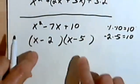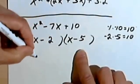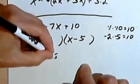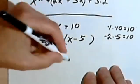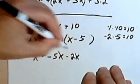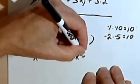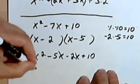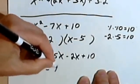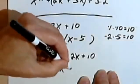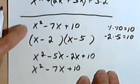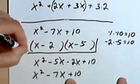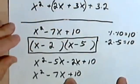And again, we can check by foiling it back to its original. x times x is x squared, x times negative 5 is negative 5x, x times negative 2 is negative 2x, and negative 2 times negative 5 is positive 10. I'll add these two middle terms together. I get x squared minus 7x plus 10. That's exactly where I began. So this factorization must be correct.